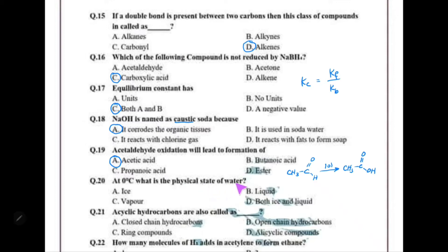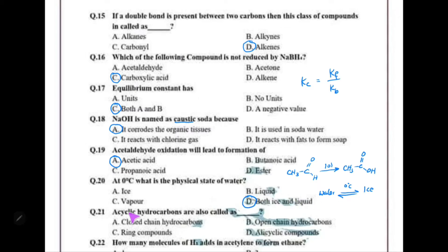At zero degrees Celsius, what is the physical state of water? At zero degrees Celsius, ice is present and it is also converting back to water — this is dynamic equilibrium. Below zero it becomes ice; above zero it becomes water. So at zero degrees, both ice and liquid water are present — this is the dynamic equilibrium point.